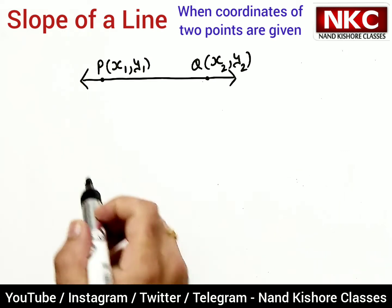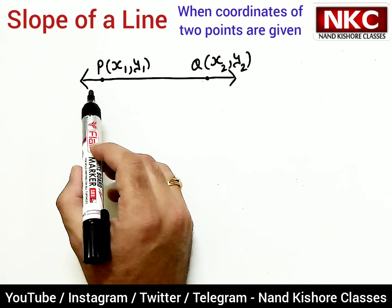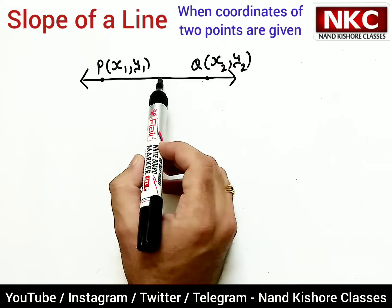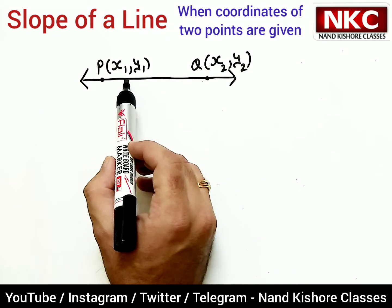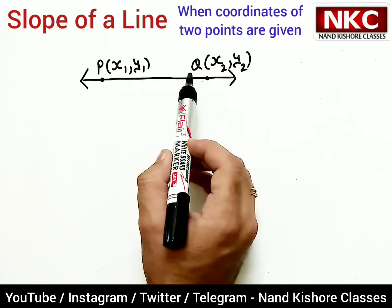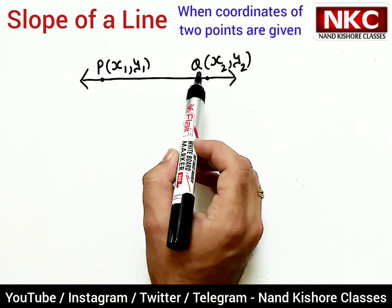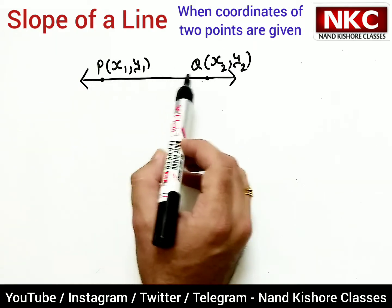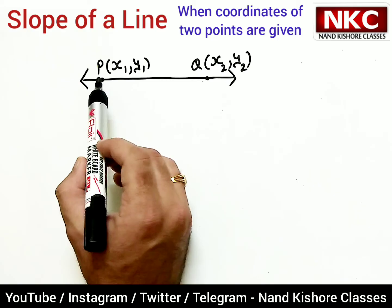Hello friends, welcome to Nand Kishore Classes. Today we are going to study how to find slope of a line when coordinates of two points are given. Check carefully—here we have a line and coordinates of two points P and Q are given.